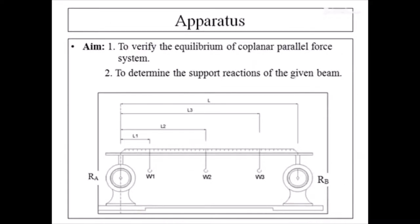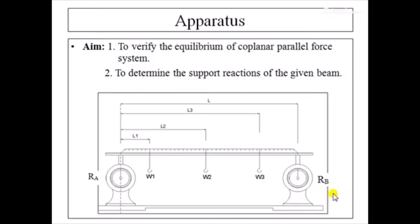This is how the apparatus assembly looks like. There is a beam — a small strip — with a scale mounted on it of 1 meter overall. There are two dial-gauge-type structures which are spring balances giving the values of reaction loads. We name the left support A where reaction force Ra acts, and the right support B where reaction force Rb acts. The aim of today's experiment is to verify the equilibrium of a coplanar parallel force system and to determine the support reactions of a given beam.